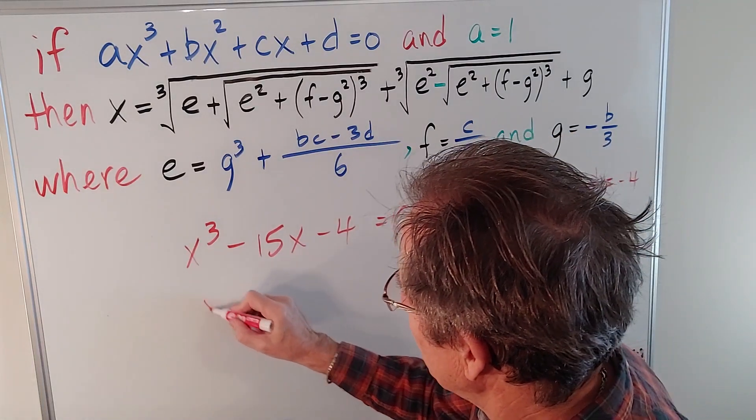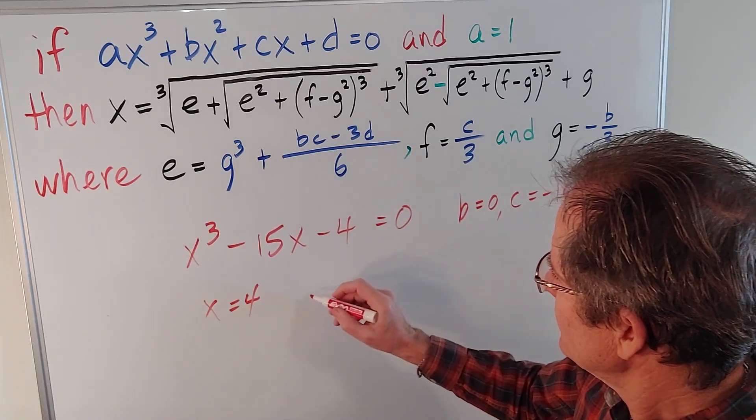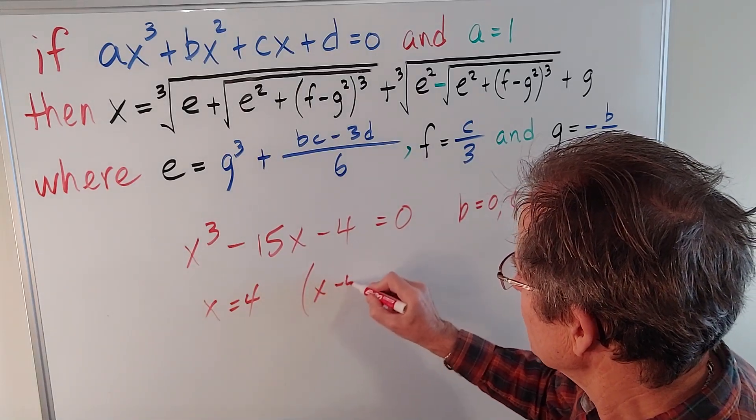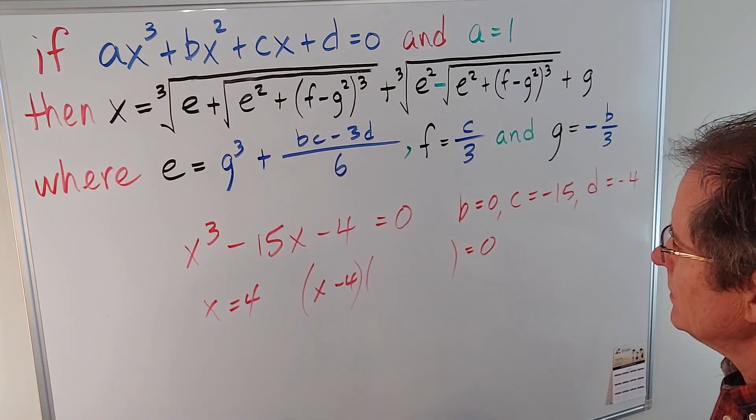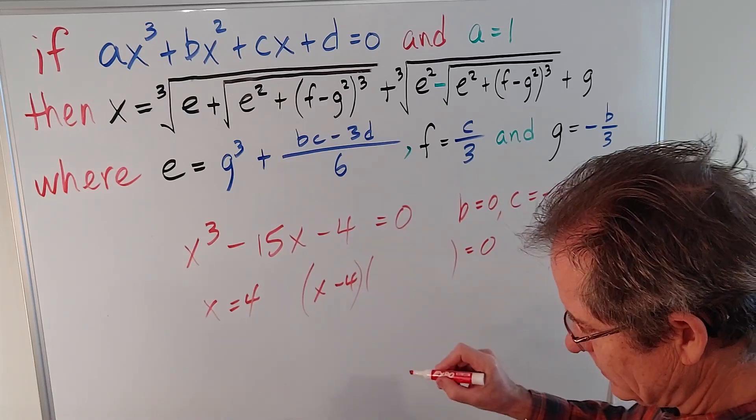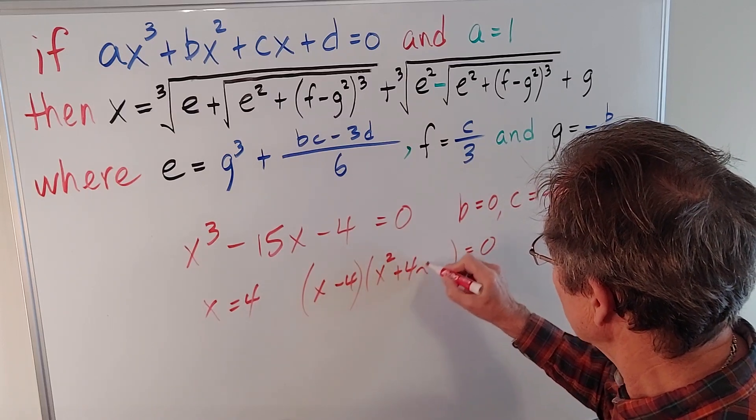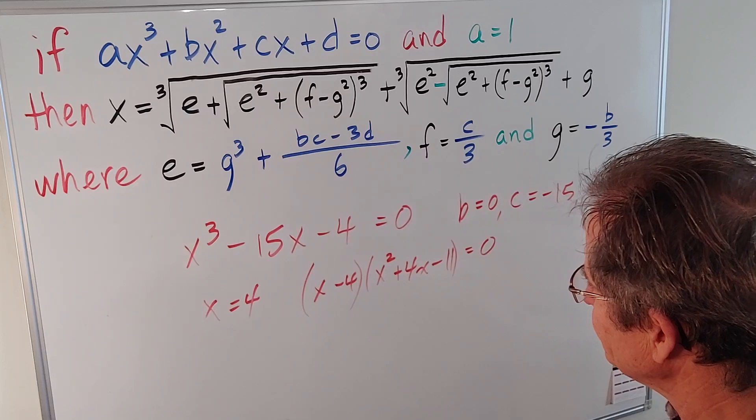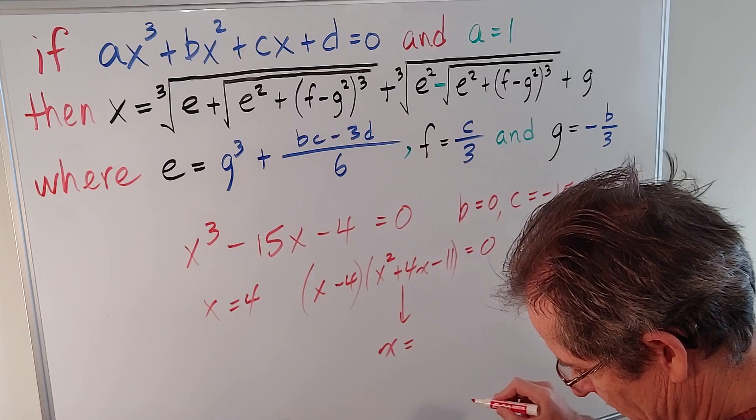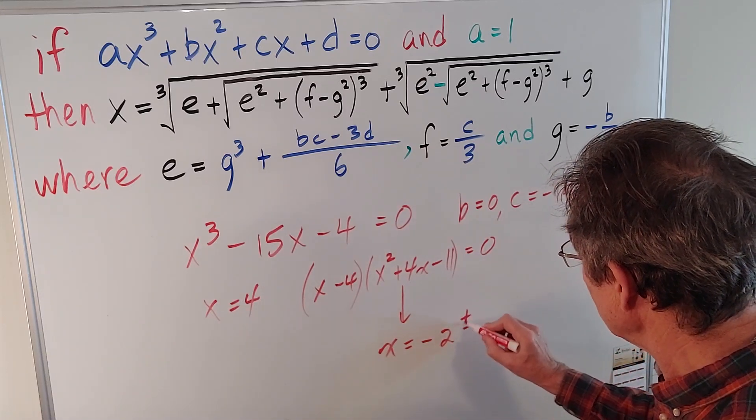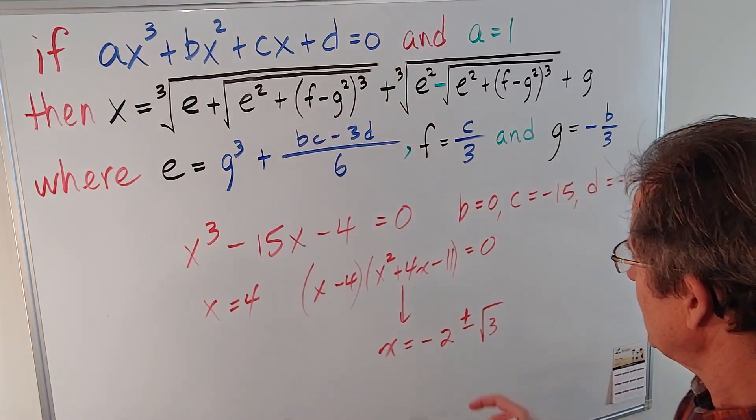You can see by inspection that x equals 4 is a solution. So we can change this to x minus 4 times some quadratic term, which turns out to be, if I do long division, x squared plus 4x minus 11. And if I use the quadratic formula on this, I'll get x equals negative 2 plus or minus root of 3.